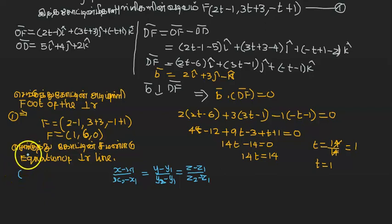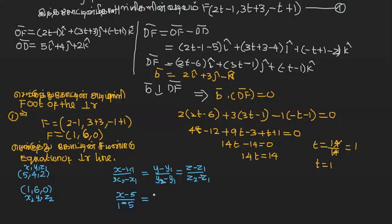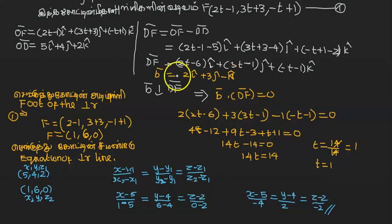We will use the formula. First point: given point 5, 4, 2. x1, y1, z1. Second point: 1, 6, 0. x2, y2. Answer: x minus 5 divided by 1 minus 5 equal to y minus 4 divided by 6 minus 4 equal to z minus 2 divided by 0 minus 2. Required equation of line: x minus 5 by minus 4 equal to y minus 4 divided by 2 equal to z minus 2 divided by minus 2. This is the required equation of line.